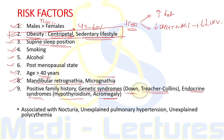This disorder is also associated with nocturia, unexplained pulmonary hypertension, and unexplained polycythemia, which can be considered complications of OSA.